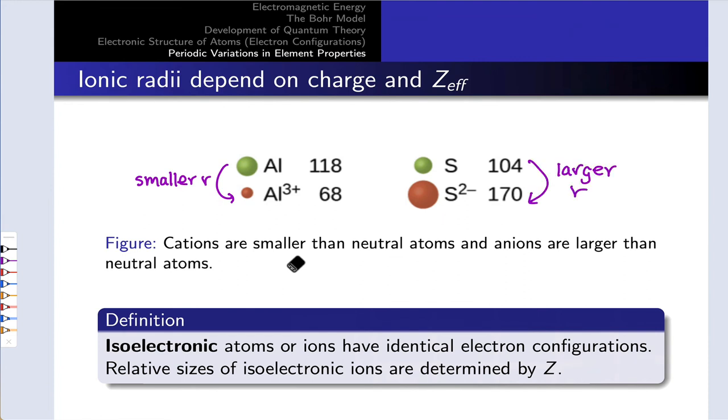On the other side, anions, because they've gained electrons, are much larger than the corresponding neutral atoms. So S2- is much larger than sulfur, because it has two more electrons. Those electrons repel one another, and the entire collection of electrons tends to take up more space.